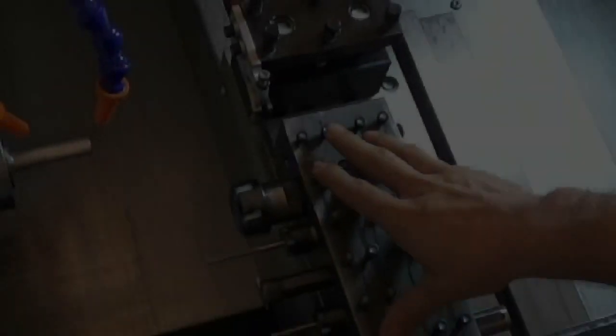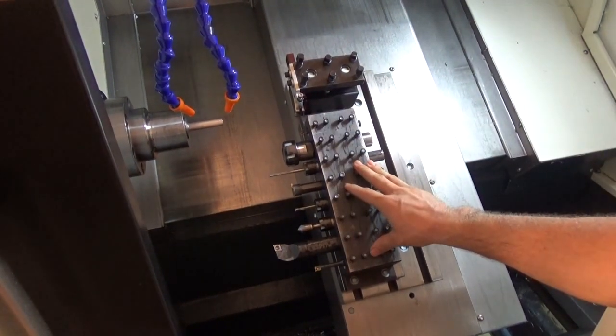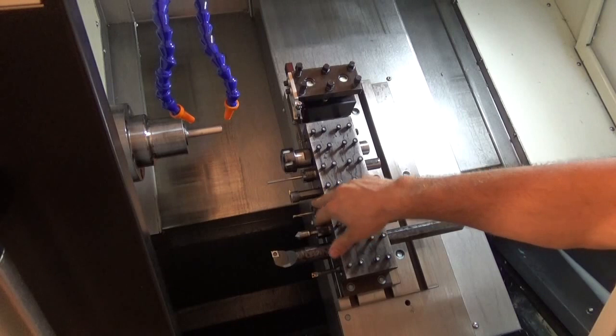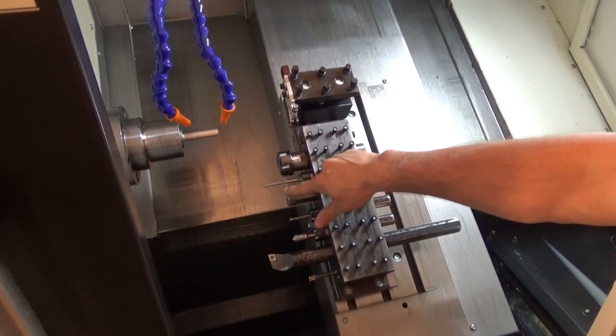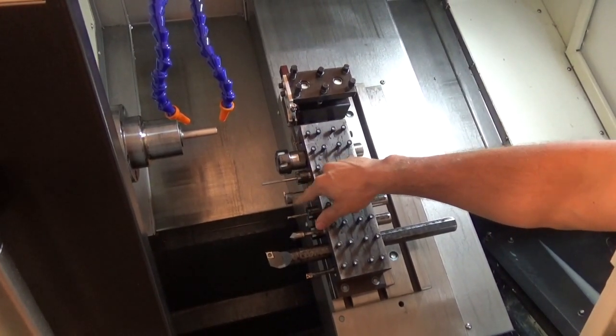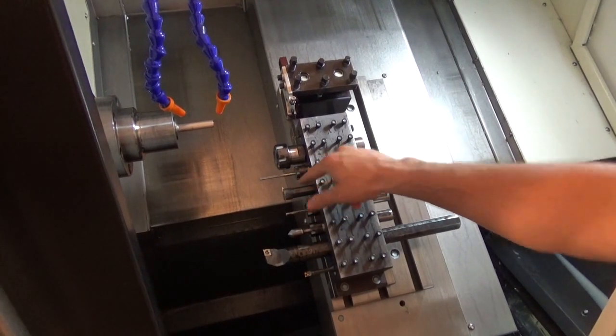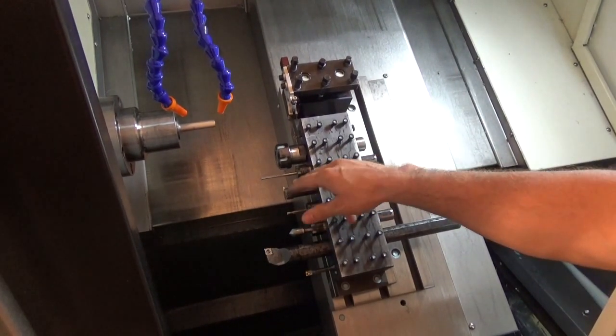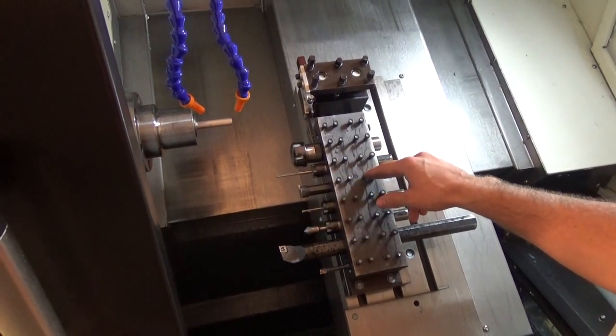The gang style lathe, so basically you have the tooling block here, just a bunch of ER collets. This multi-bar is a nice tool to have because you can turn on both sides, so it kind of adds an extra tool to this one slot here.